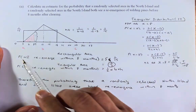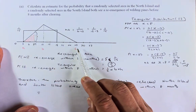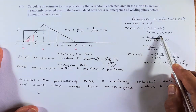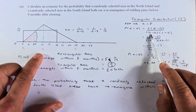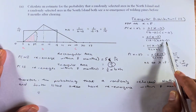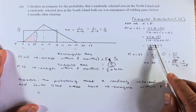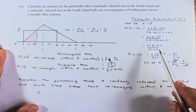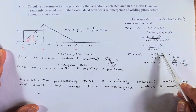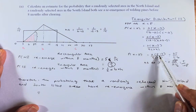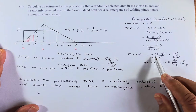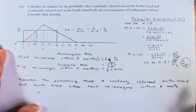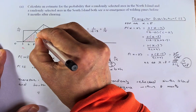Substituting the values: 2 times (x minus 3), divided by (12 minus 3) times (27 minus 3). Simplifying: 2 times (x minus 3) divided by 9 times 24. When x equals 8, substitute x = 8: 2 times (8 minus 3) over 9 times 24. That gives us 2 times 5 equals 10 in the numerator, and 9 times 24 equals 216 in the denominator. Simplifying, the height is 5 over 108. So the height at x equals 8 for the triangular distribution is 5 over 108.